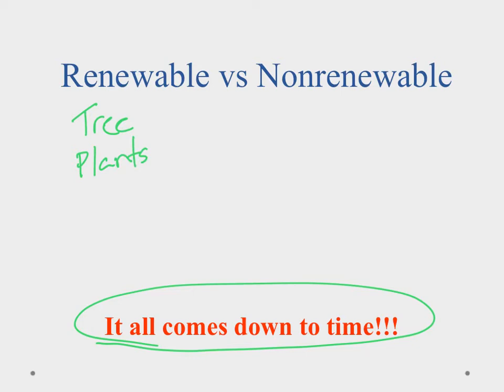Most plants are renewable because they can grow back in time. Non-renewable resources would be things like coal. You can take coal and burn it, but it takes millions of years to replenish or replace itself, so you can't do this in a lifetime — that's why we consider it non-renewable. Other examples of renewable resources are things that are inexhaustible, meaning they'll last forever, like the sun and the wind. Those are considered renewable because we have an endless supply of them.